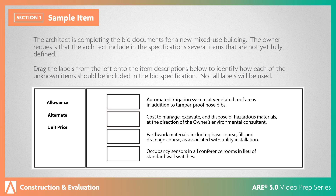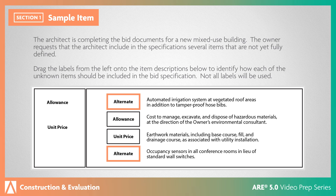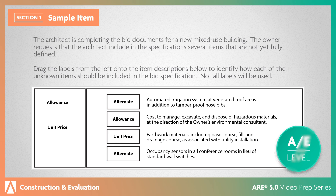In this case, the hazardous materials cost is an allowance because the full cost is unknown at the time of bidding, but the work needs to be included in the project. The earthwork cost is a unit price because the basic scope is understood, but the extent of the work is unknown. The irrigation system and occupancy sensors are both alternates because they are in addition to, or in lieu of, other parts of the work. This is an AE-level item requiring the classification of different scope items in order to recommend the appropriate use of contract variables.